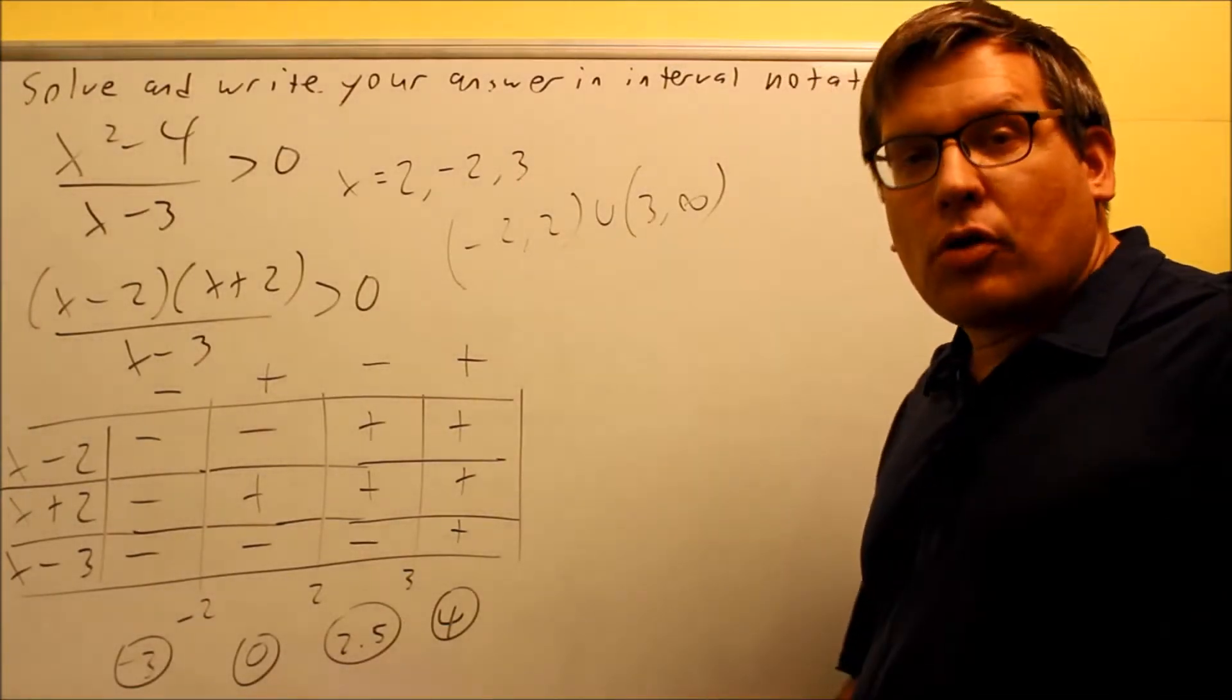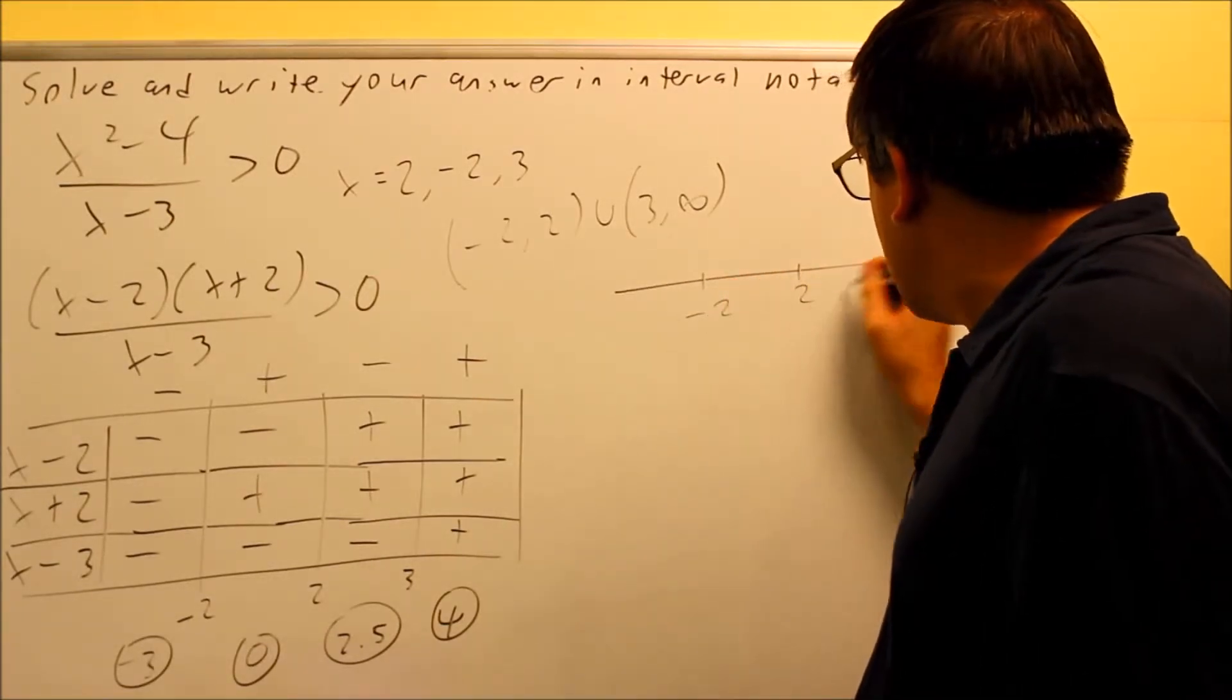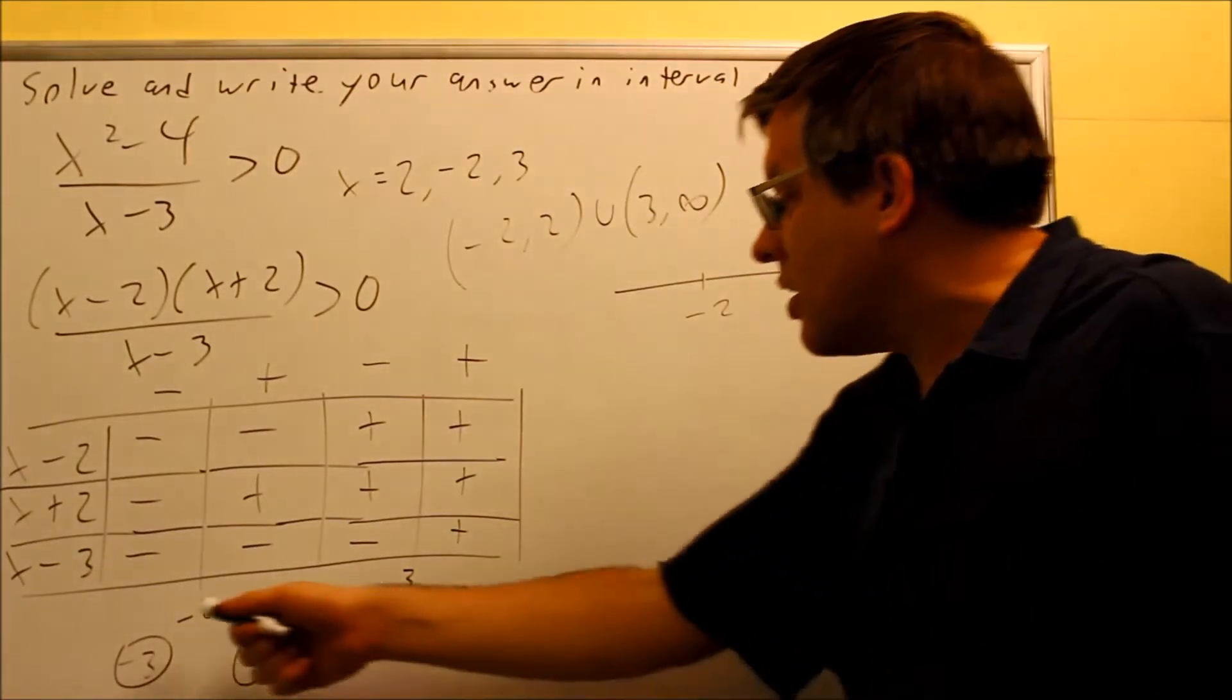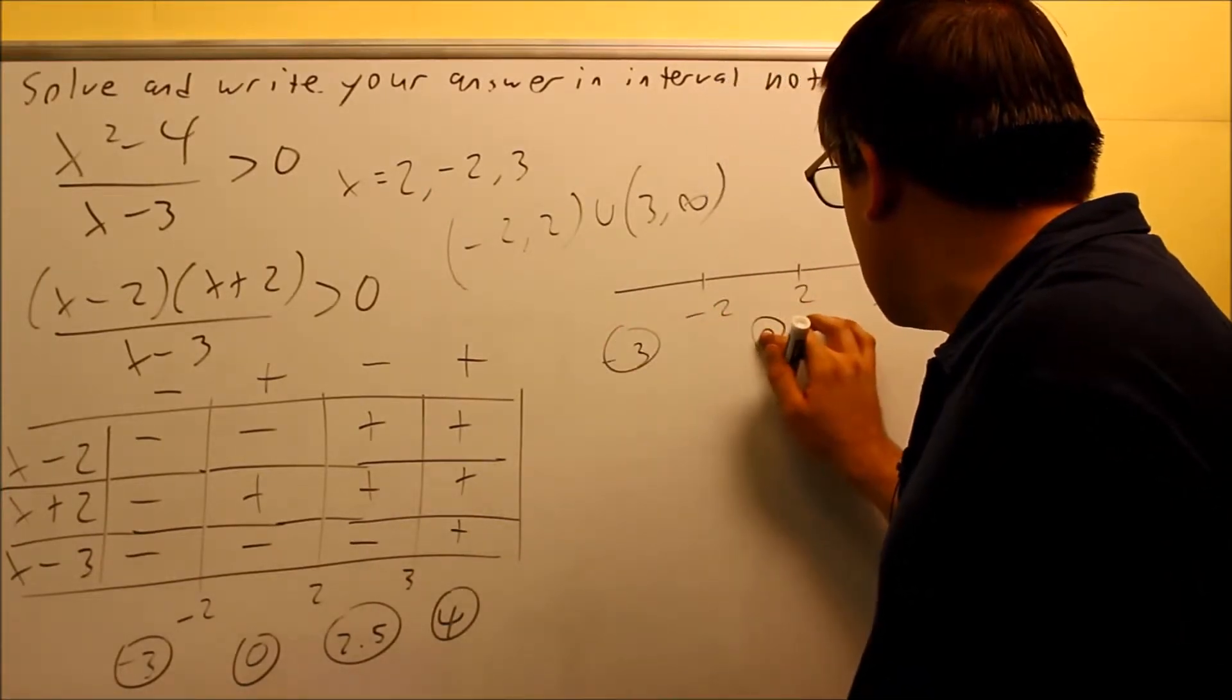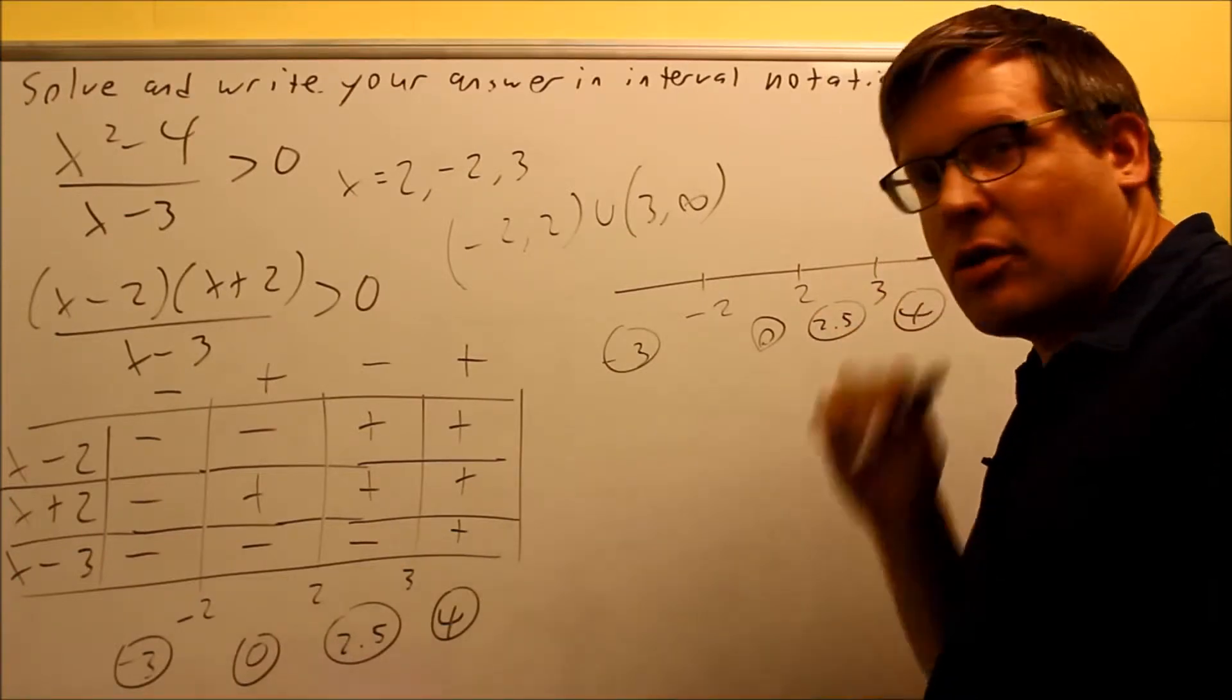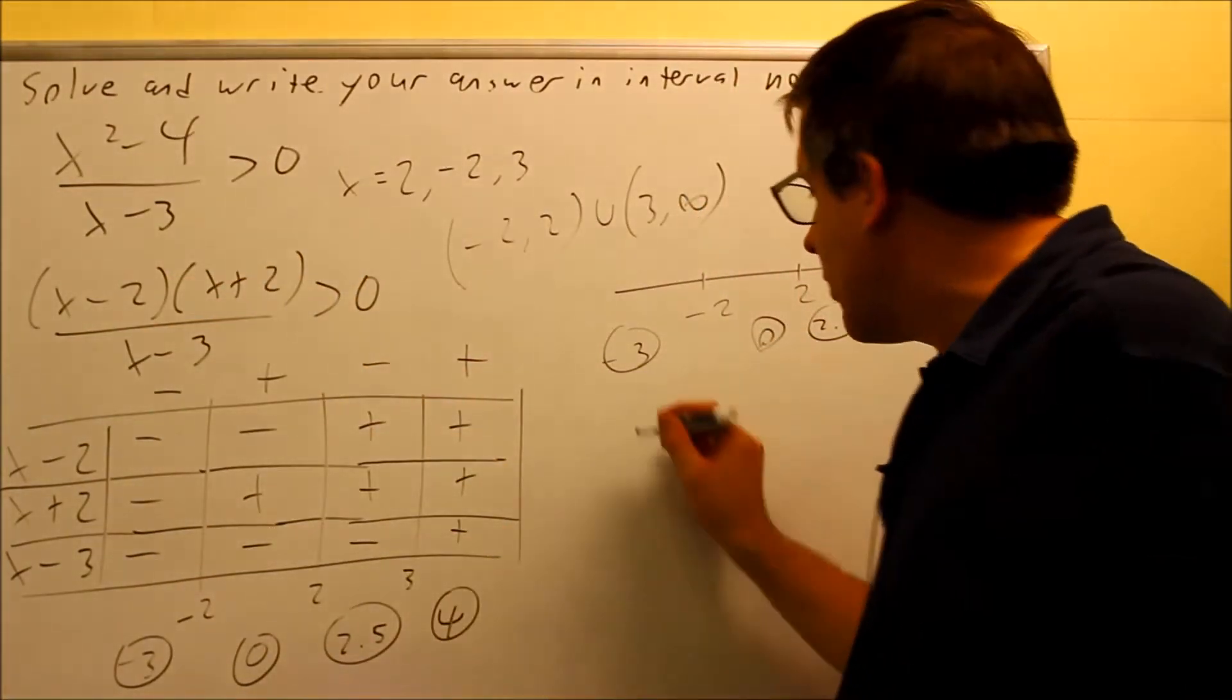Next, I want to do the number line method. So if you do the number line method, that means you're going to put down these numbers: negative 2, 2, and 3. You put those in there. And again, you're testing each of these down below. So we have the same test numbers as before: negative 3, 0, I have 2.5, and I have 4, same test numbers as before. When I test these numbers, I want to put them into here. I want to use the one that's factored. It'll be easier to use there.